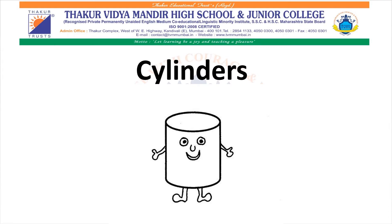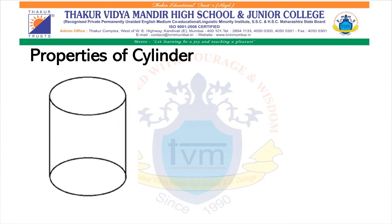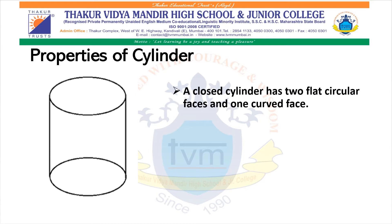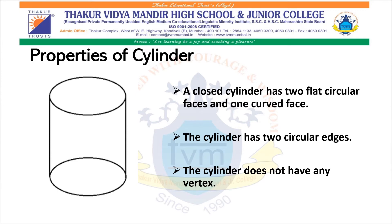Cylinders. Properties of Cylinder: A closed cylinder has 2 flat circular faces and 1 curved face. The cylinder has 2 circular edges. The cylinder does not have any vertex.